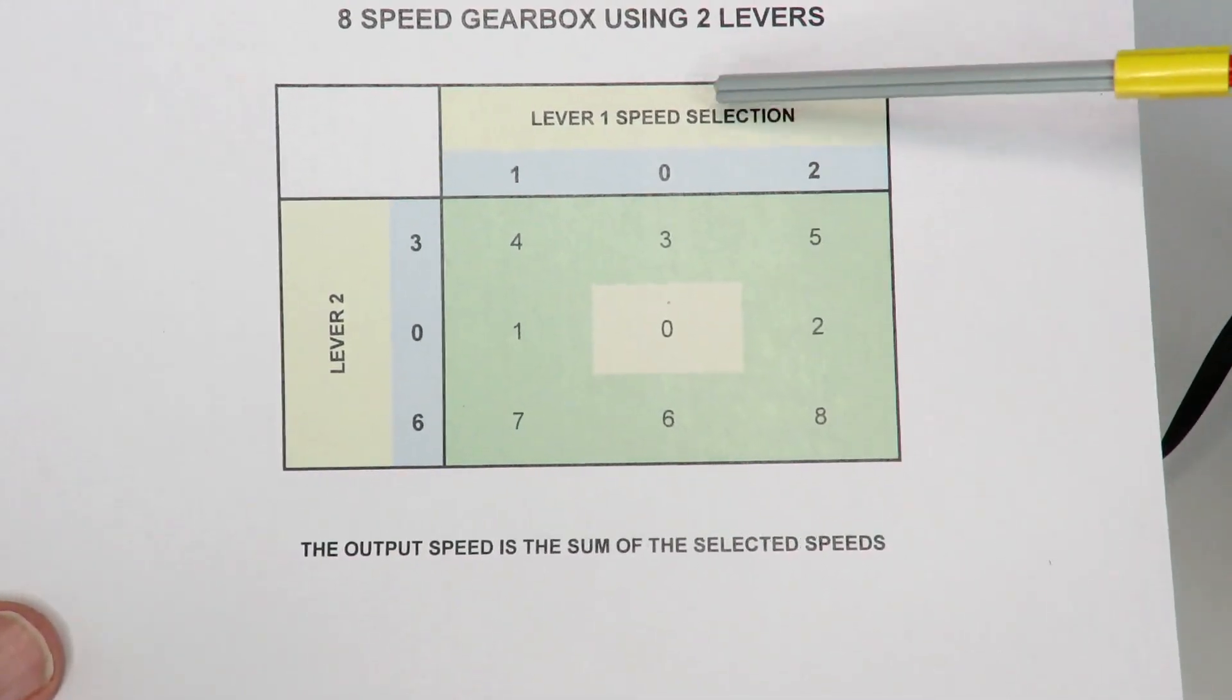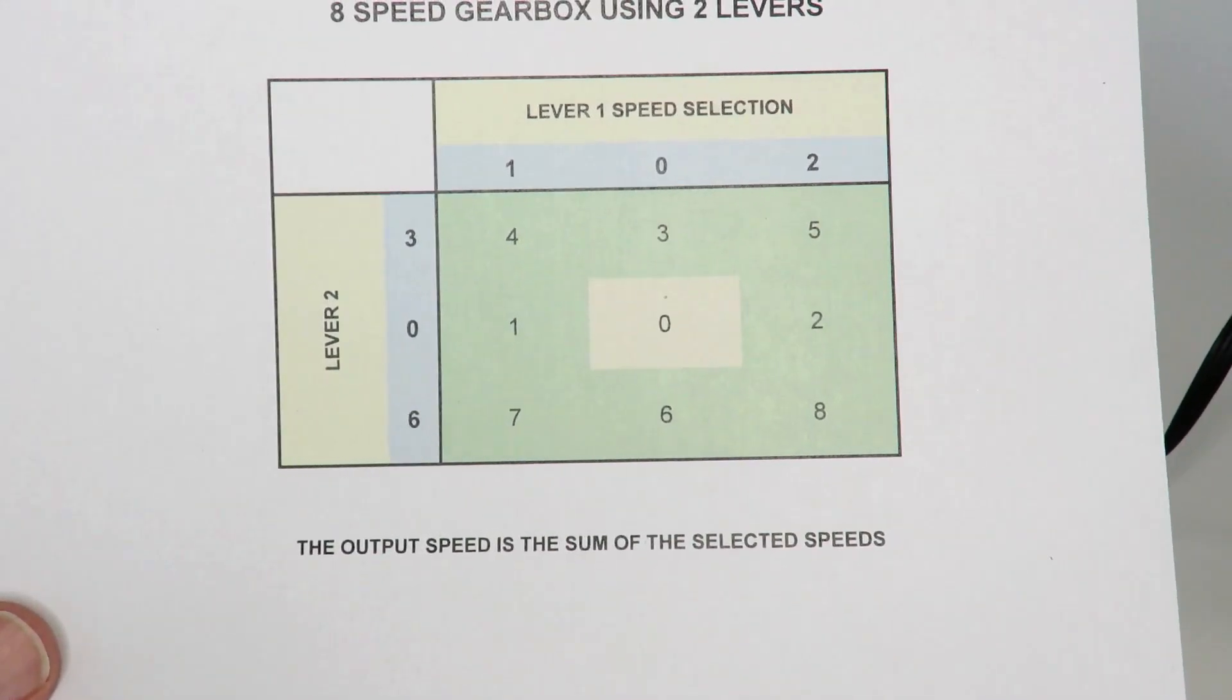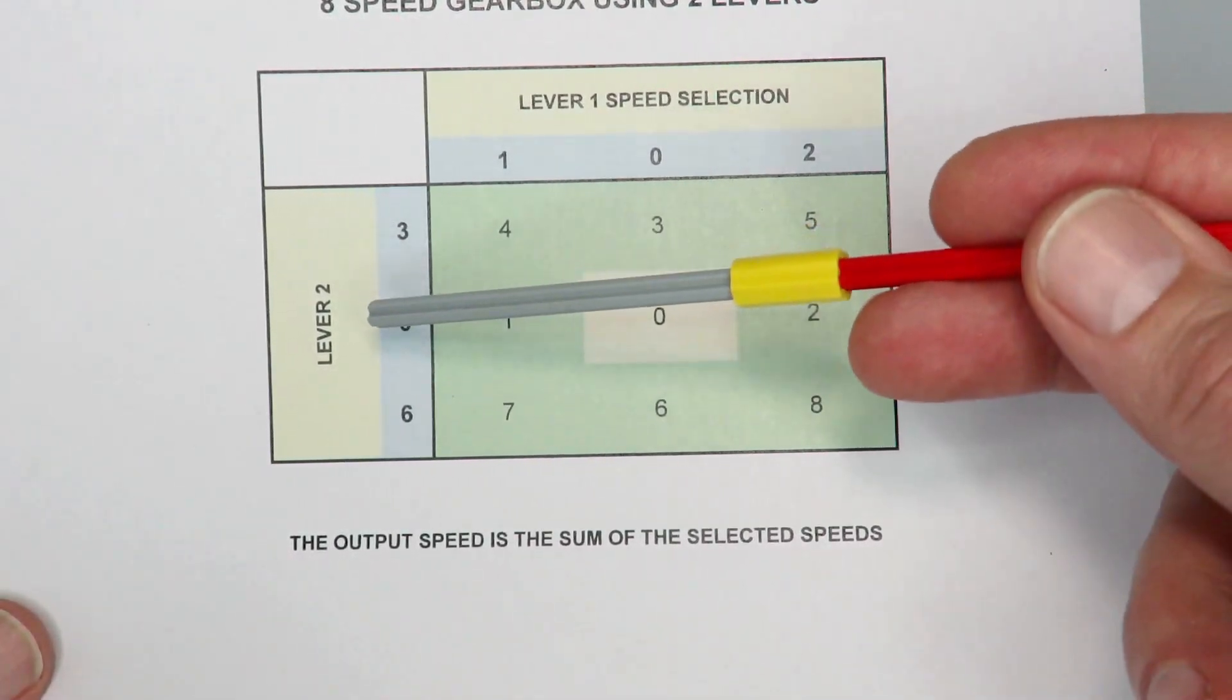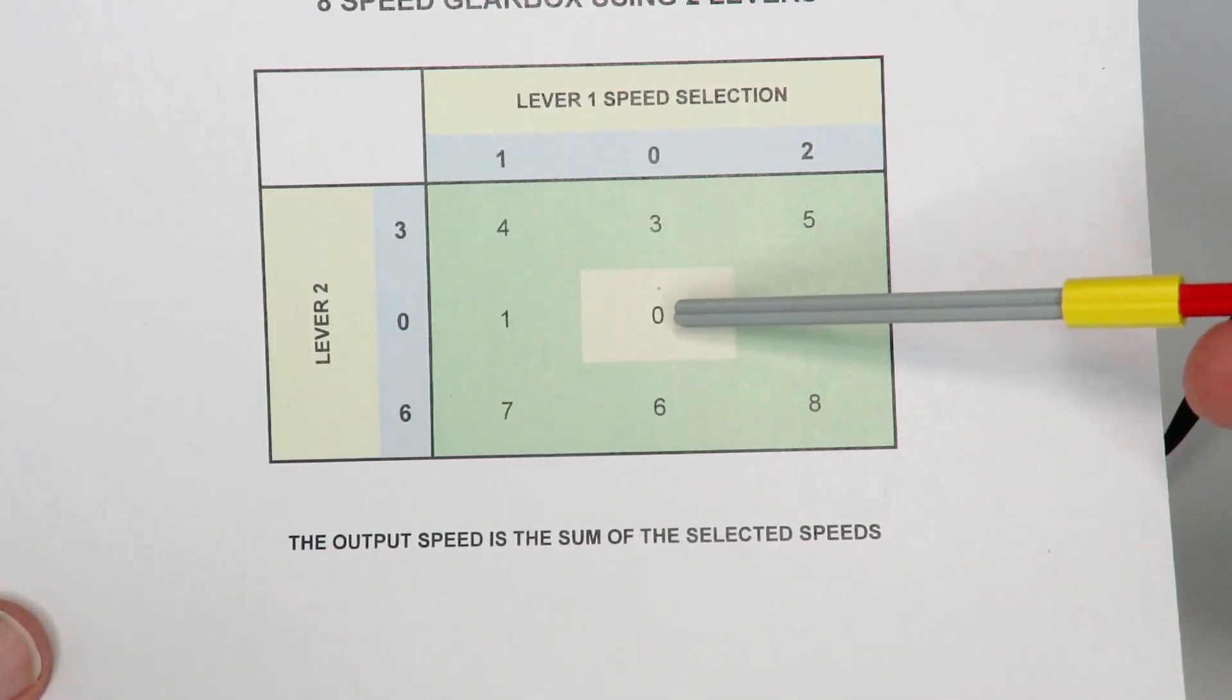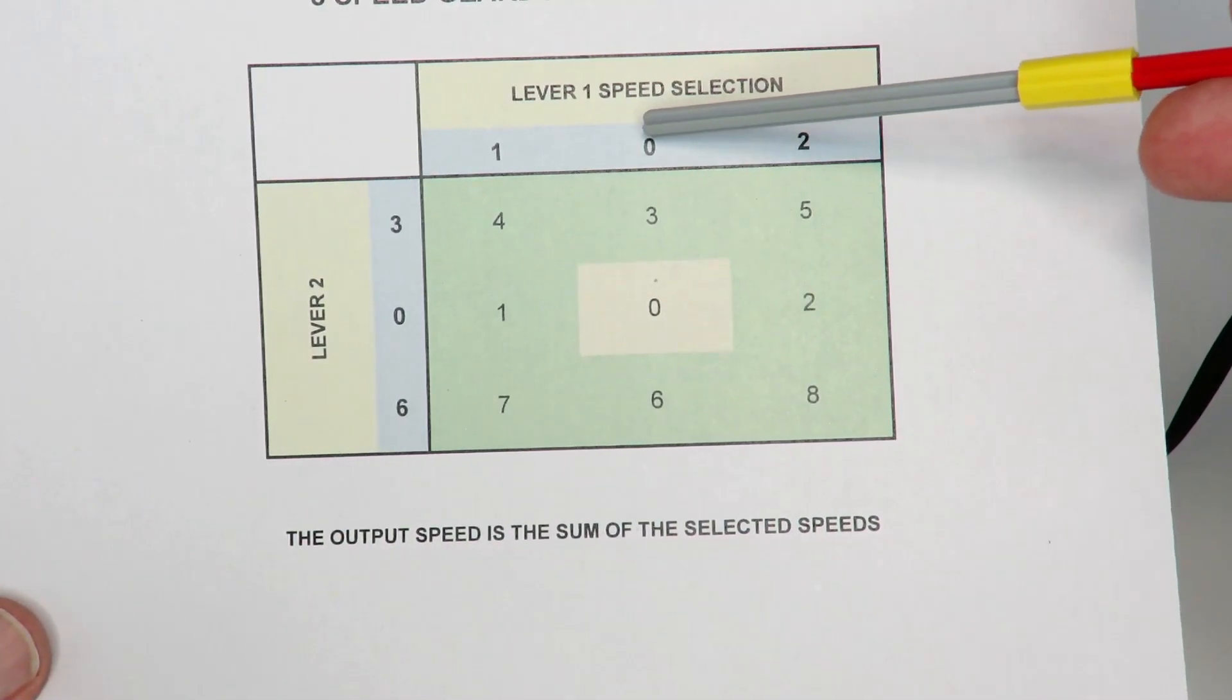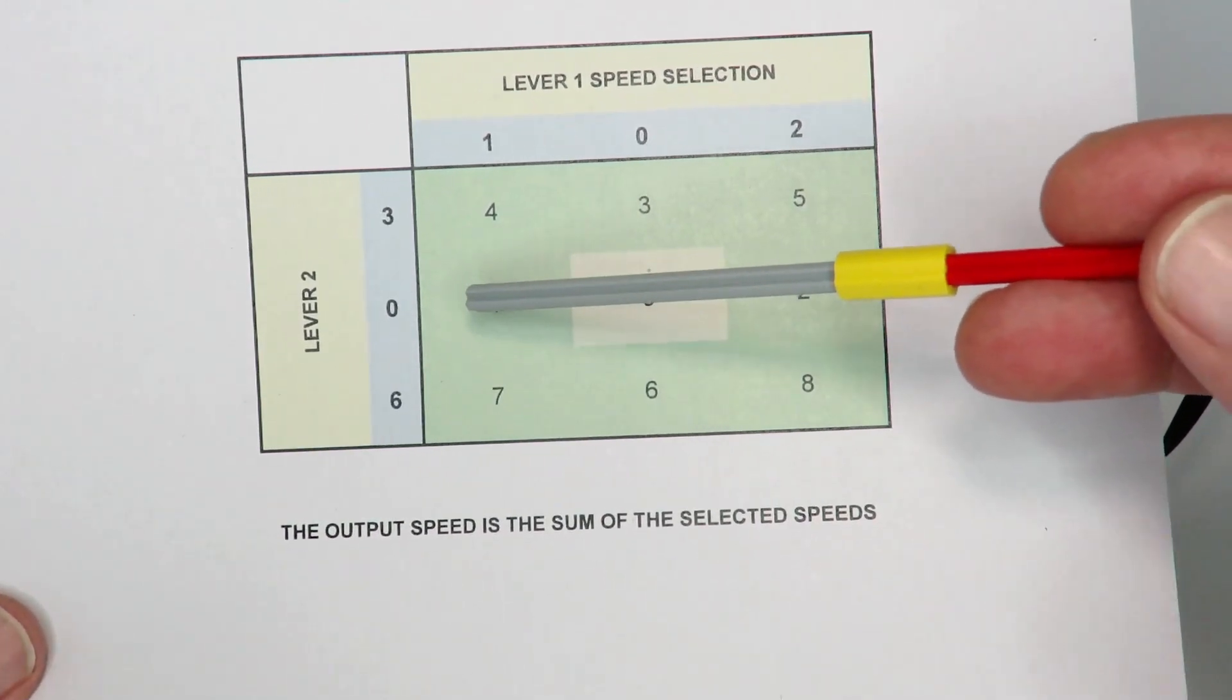What that means is, in fact, we can create this speed table. We have both in neutral, zero-zero. Then when they add up, of course, you know, speed zero. However, when one's in speed, for example, speed zero, we can have speed one through this selector, then speed two.